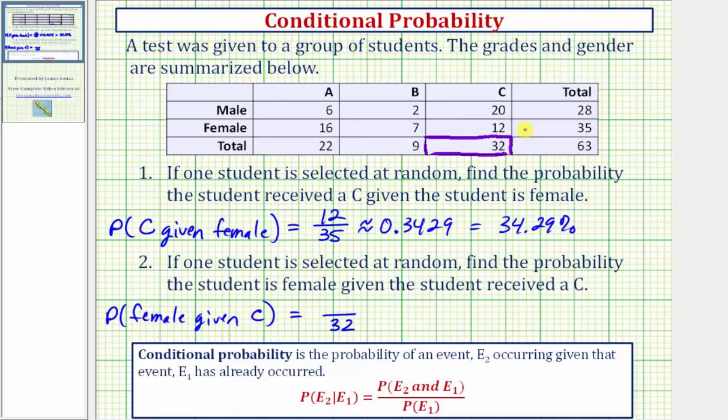So again, here's information about the females. Notice how 12 of the C students are female. And therefore, the probability of selecting a female given we know the student received a C would be 12/32. Now here, this fraction does simplify. There's a common factor of four. So this simplifies nicely to 3/8.